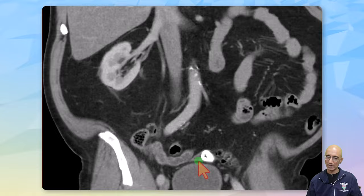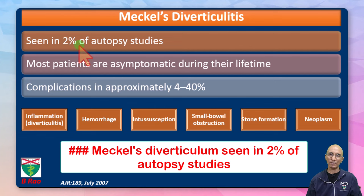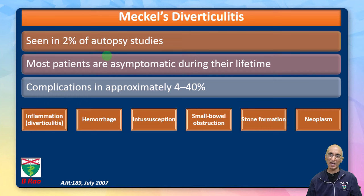The imaging appearances are consistent with Meckel's diverticulitis. Classically, Meckel's diverticulum is seen in up to 2% of the population based on autopsy studies. Most patients are asymptomatic during their lifetime; however, complications can be seen in up to 40% of patients.